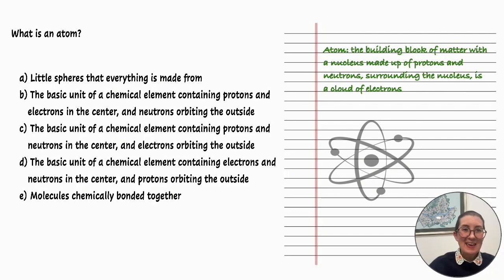What is an atom? A: Little spheres that everything is made from. B: The basic unit of a chemical element containing protons and electrons in the center and neutrons orbiting the outside. C: The basic unit of a chemical element containing protons and neutrons in the center and electrons orbiting the outside. D: The basic unit of a chemical element containing electrons and neutrons in the center and protons orbiting the outside. E: Molecules chemically bonded together.